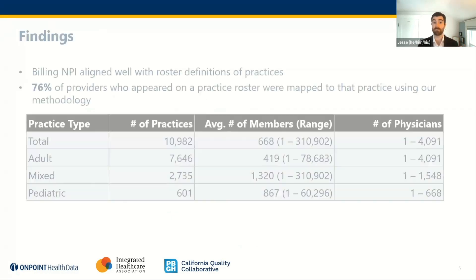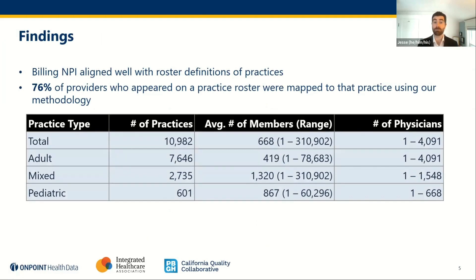Now I'm going to show a few results. This table shows, at a high level, the number of practices we identified. We identified about 11,000 practices, many of which were adult or mixed, but some pediatrics as well. There's a wide range of members and providers, including a lot of solo practitioners. There are two key findings: one is that the billing NPI aligned fairly well with the roster definitions of practices, so this was a valid approach for us. And we identified and were able to map 76% of providers who appeared on a practice roster — so about 76% of those relationships from provider to practice we were able to map using our methodology.